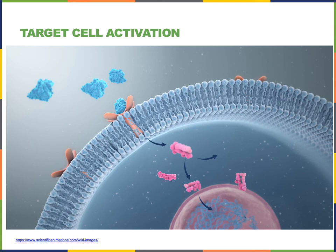Some hormones bind to receptors that are on the surface of the cell in the plasma membrane, as we can see in the illustration here. In this case, a message will be produced inside the cell known as a second messenger, which will then have an influence on the activity of other proteins inside the cell.